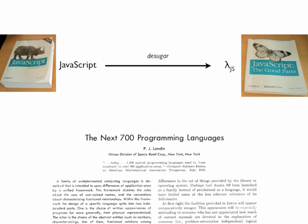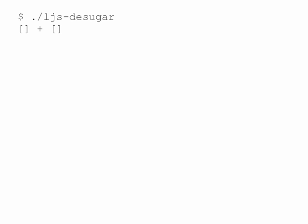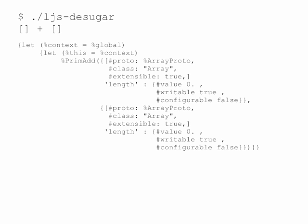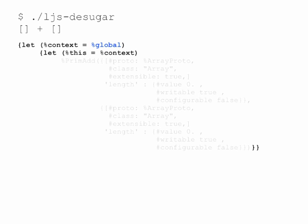With this desugaring function in hand, we can take JavaScript programs, such as this deceptively simple array plus array program from the Wat video, and make the hidden complexity manifest. What you're seeing here is the desugared version of array plus array. I'm going to step through this program to show how we get to the answer that Gary saw.